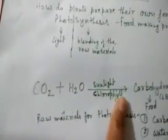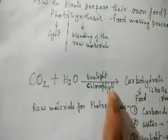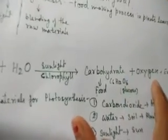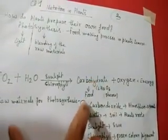During the photosynthesis process, carbon dioxide plus water, in the presence of sunlight and chlorophyll, produces carbohydrate, oxygen, and lots of energy. The formula of carbohydrate is C6H12O6 in the form of glucose, and this glucose later converts into starch and is stored in the plant leaves.